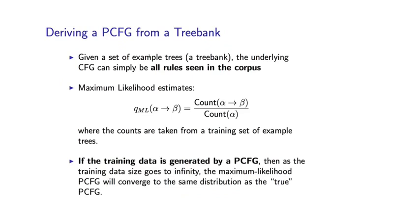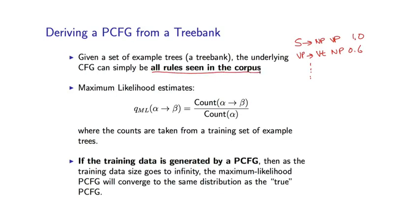Once we have a treebank, learning a PCFG is actually extremely straightforward — almost trivial. There are two things we need to learn. One is the set of underlying rules in the probabilistic context-free grammar — we might learn a few rules like this. The other thing we need to learn is parameters associated with these rules, for example 1.0, 0.6, and so on. In terms of the rules in the PCFG that we learn, we simply take all rules seen in the treebank. Learning the context-free grammar is simply a matter of reading off the context-free rules from the treebank.